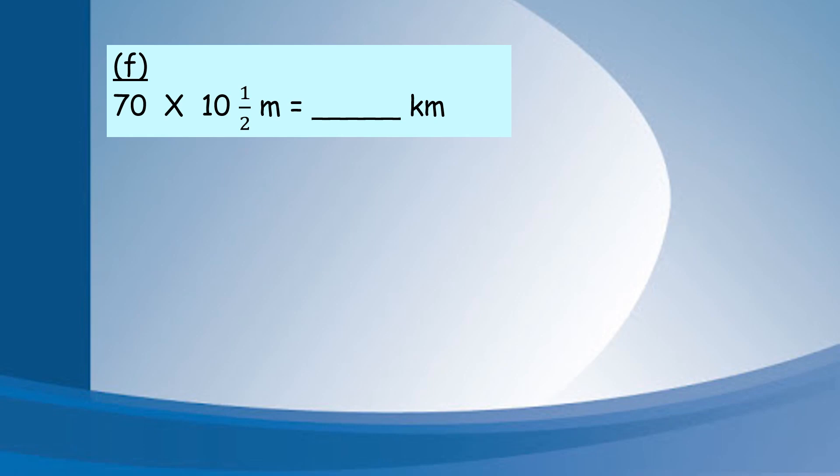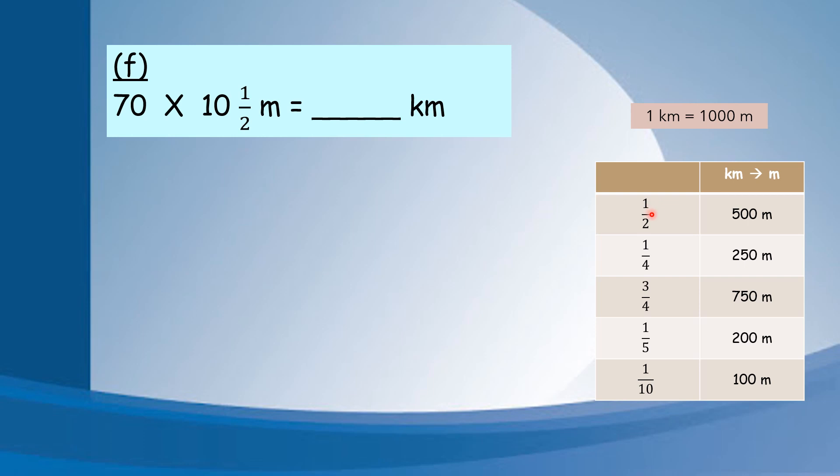For question F, we check the unit - meter and km. Do you still remember? 1 km is equal to 1000 meter. For this table, this table is from km convert to meter. For example, 1 over 2 km convert to meter. But this question is 1 over 2 m convert to km. Can I use this table? M to km - it cannot. We cannot use this table because this table is km convert to m. Now, m to km cannot use this table.